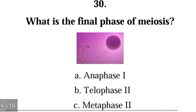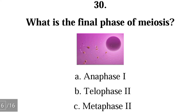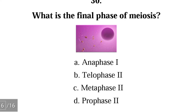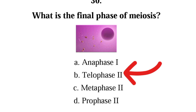Question 30: What is the final phase of meiosis? A. anaphase 1, B. telophase 2, C. metaphase 2, D. prophase 2. The correct answer is B, telophase 2.